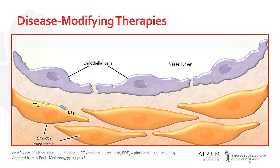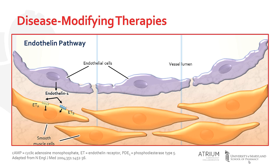A number of disease-modifying therapies have been developed to reverse the pulmonary vasoconstriction that occurs in PAH. These therapies work on one of three major pathways. The first we'll discuss is the endothelin pathway. Patients with PAH have excess circulating concentrations of endothelin-1, which leads to vasoconstriction and smooth muscle proliferation. Endothelin receptor antagonists, such as bosentan, inhibit endothelin receptors to prevent this process.